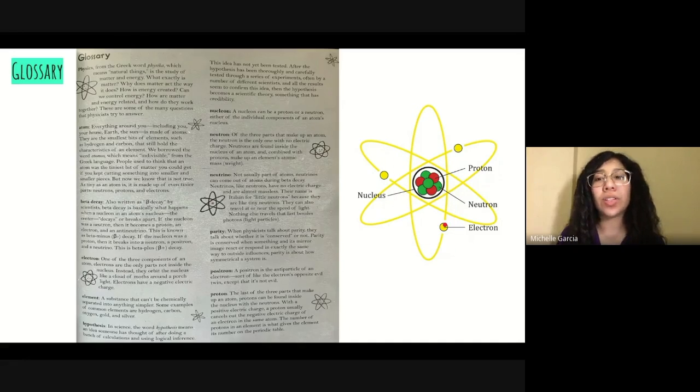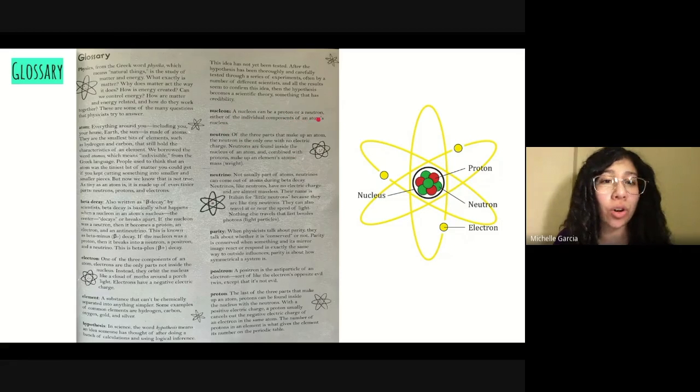Now that you understand neutron, proton, and electron, you can now understand nucleon. A nucleon can be a proton or a neutron, either of the individual components of an atom's nucleus. So what that's saying is that protons and neutrons can also be called by a different name, and that is nucleon. Nucleons live in the nucleus. Since protons and neutrons live in the nucleus, they can also be named nucleons.